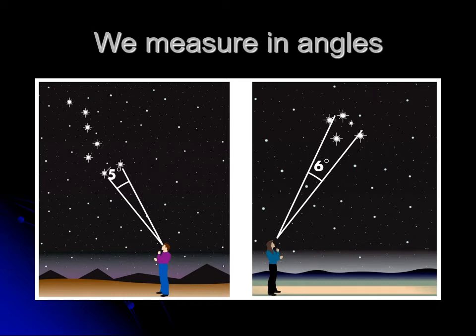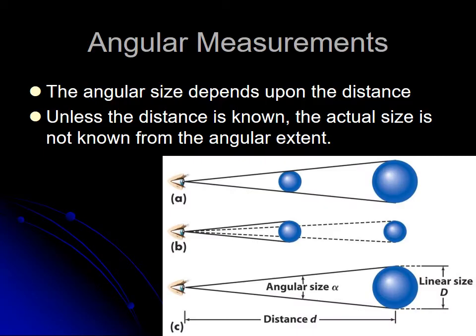We would say that these two stars in the Big Dipper are five degrees apart. These stars here are six degrees apart. The angle measurement is related to the distance.